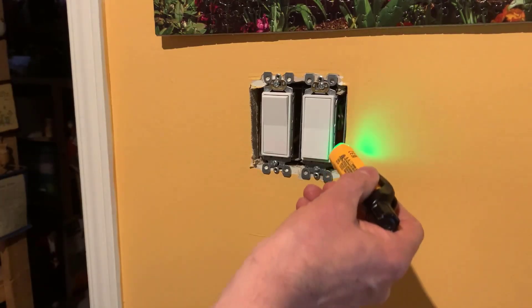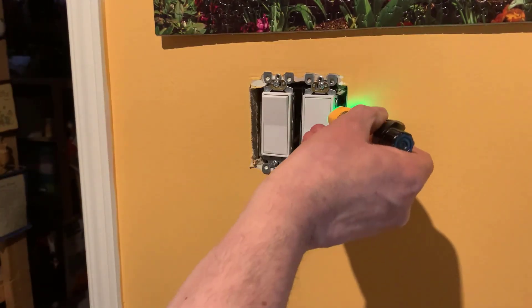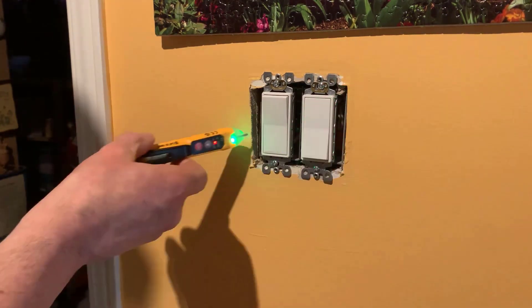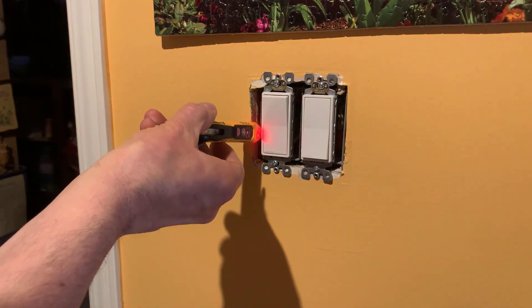The third mistake comes when you're working in a multi-gang box that has more than one switch. You've turned the breaker off for the circuit you're going to work on, that's great. But many times there are different circuits coming into that multi-gang box, one circuit for each of those switches. You need to make sure you test every wire in that box to make sure it's off, or else you could end up shorting something or touching a live wire. Use a non-contact voltage tester to make sure you test every wire in the box before you start working on the switch you're going to replace.